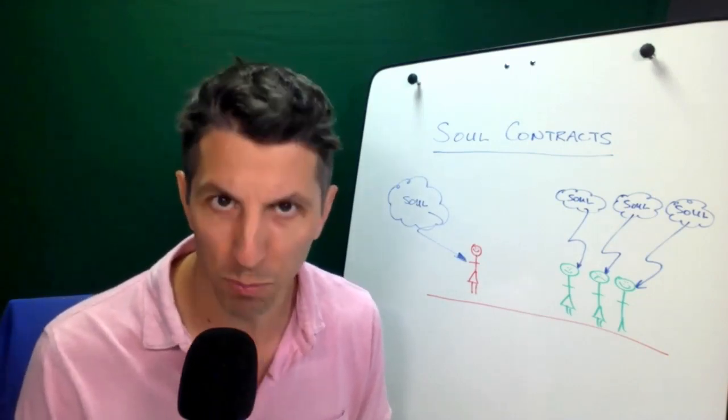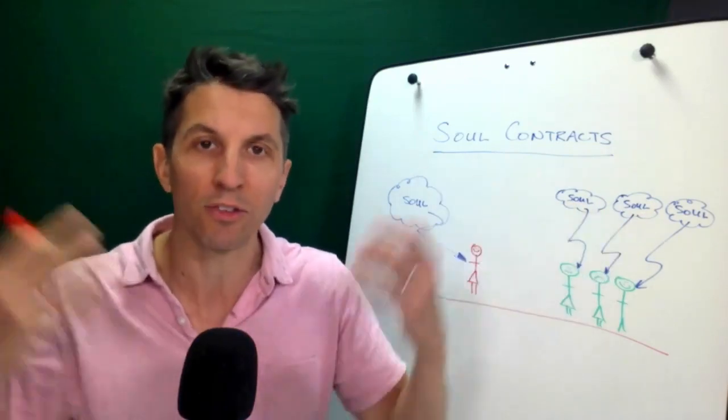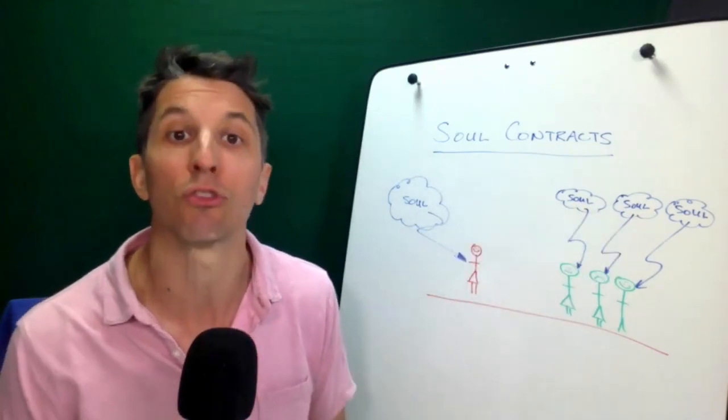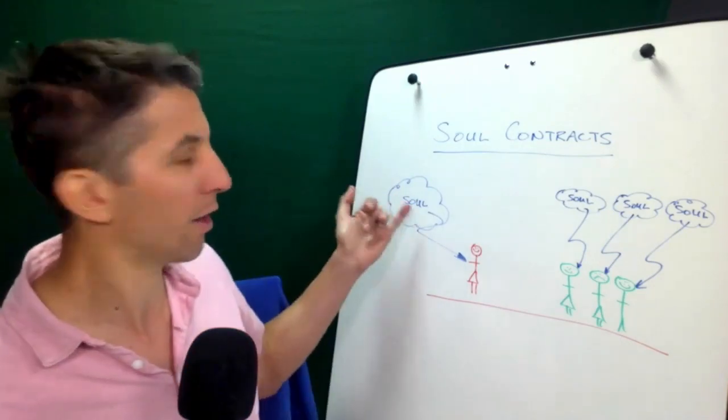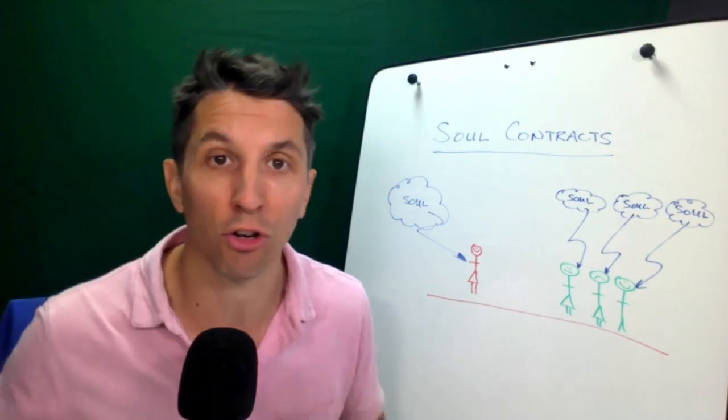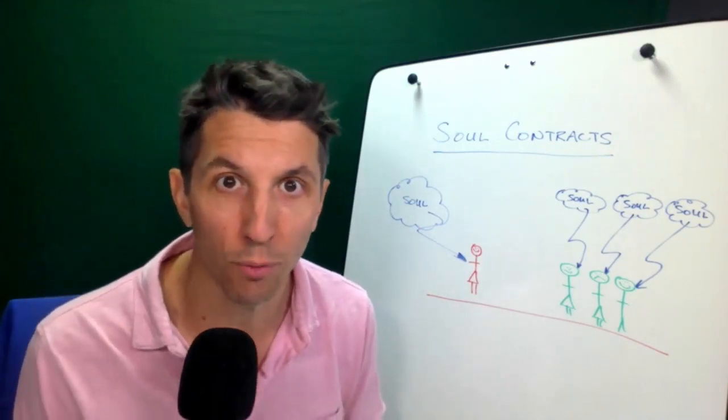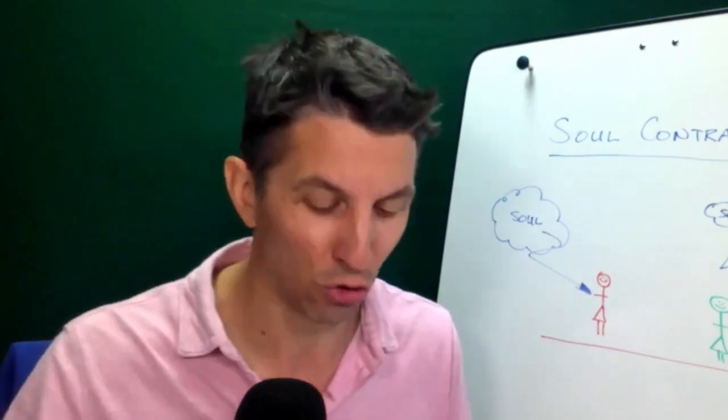So that we could experience growth. And why is that happening? Because the All That Is wants to experience all that is, and the only way you can do that is through us. So individually, our soul made a choice to say I'm going to have this experience on this earth, and then certain things are going to show up, and then I'm going to make some choices about what I decide to do.